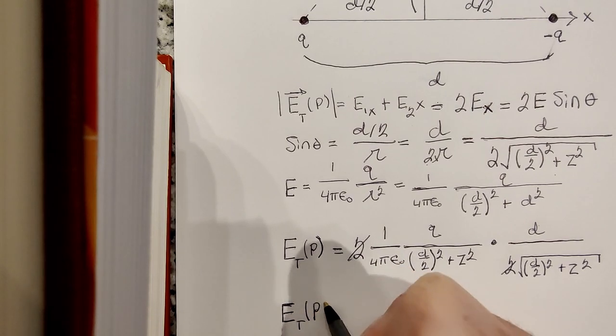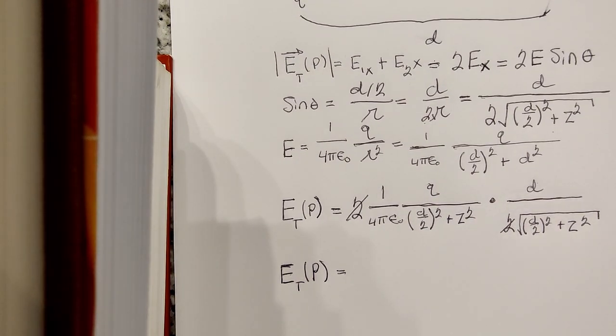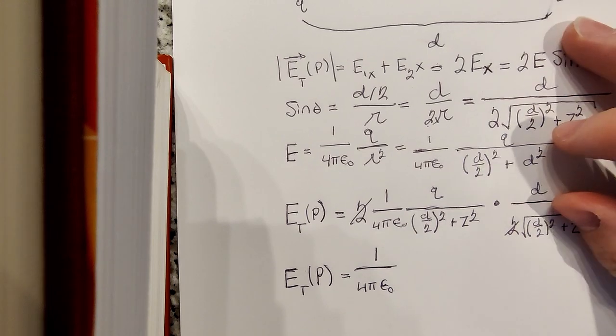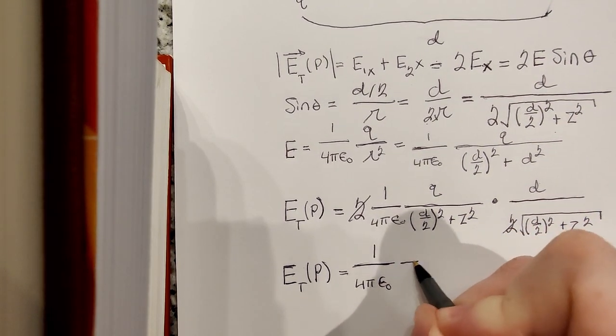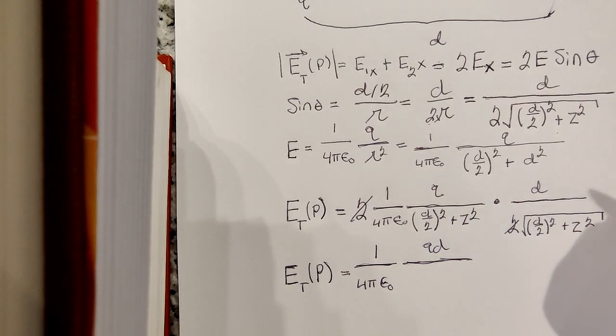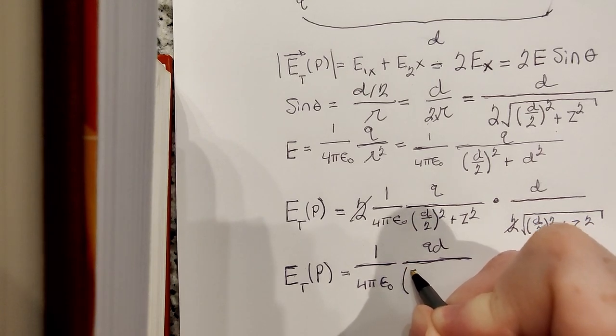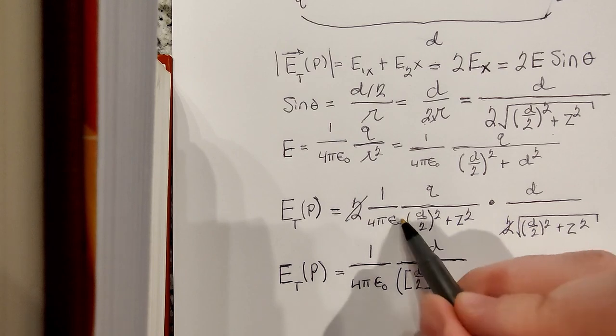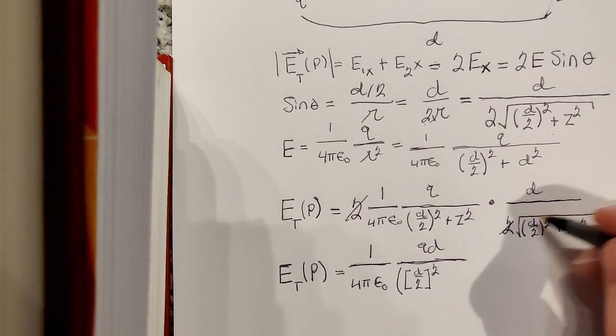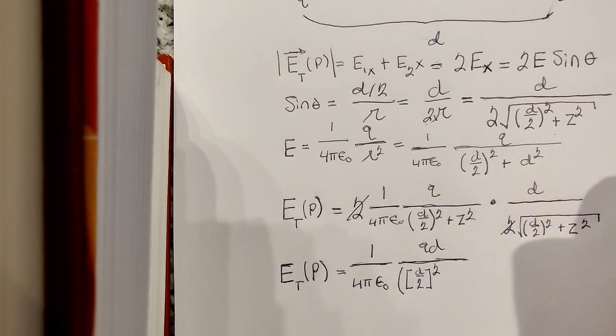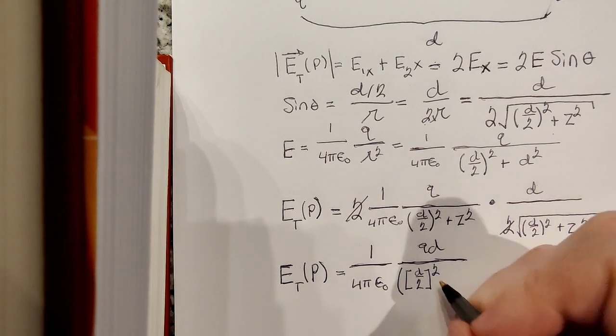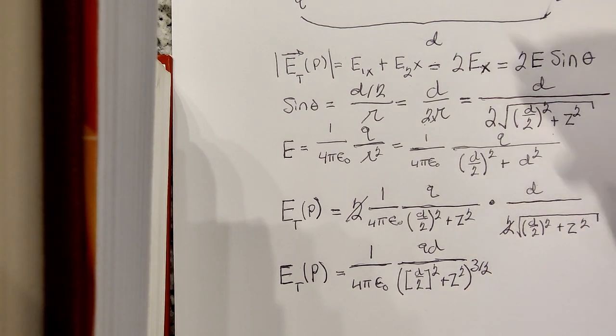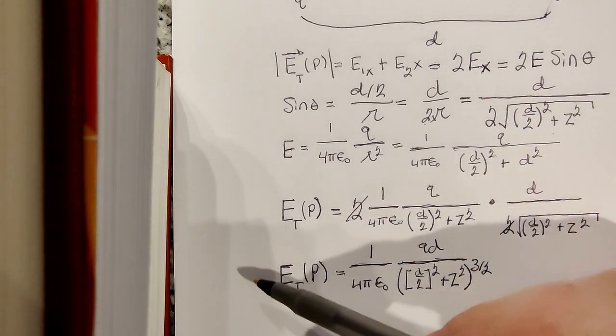So the magnitude of the electric field at point P is then just 1 over 4 pi epsilon naught, and we have Q D on top, and then we have d over 2 squared, all that to the 3 halves power.